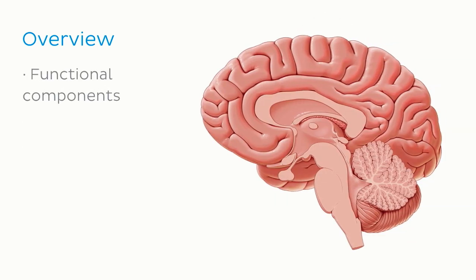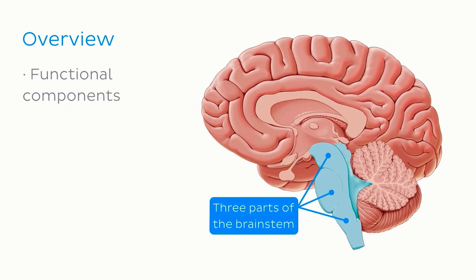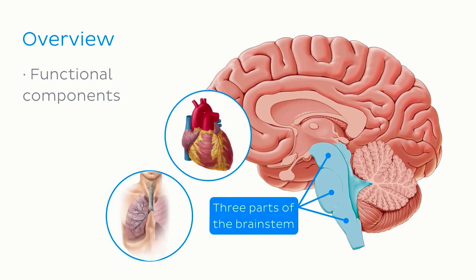Next, the different functional components of the brain will be examined, starting with the three parts of the brainstem, which control the lowest, most basic bodily functions like breathing and heart rate.